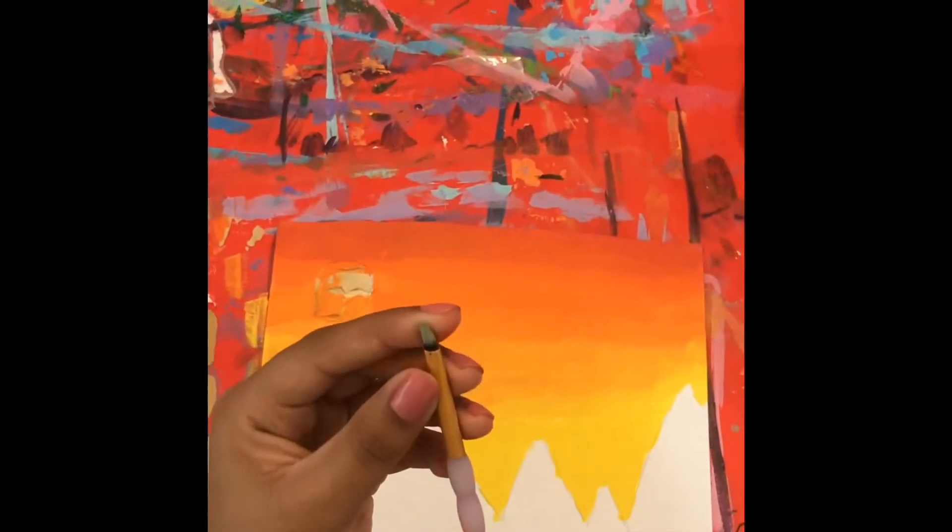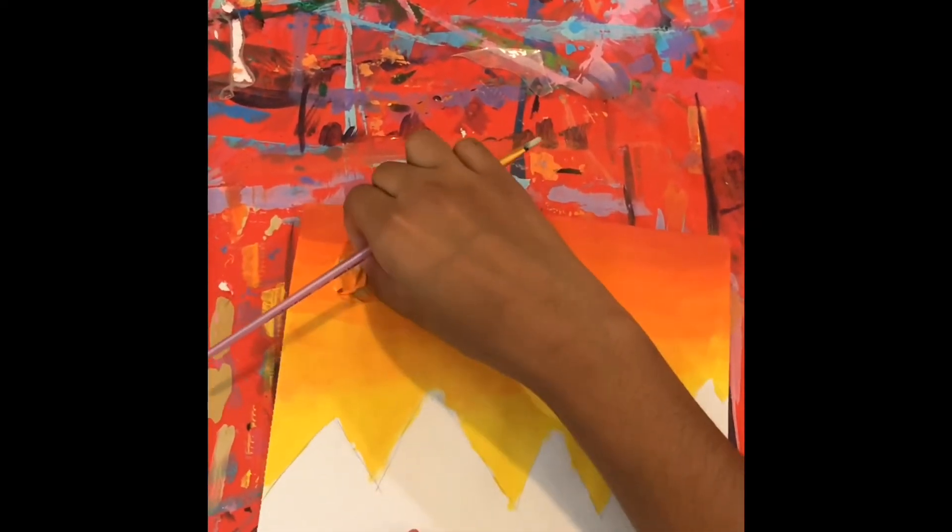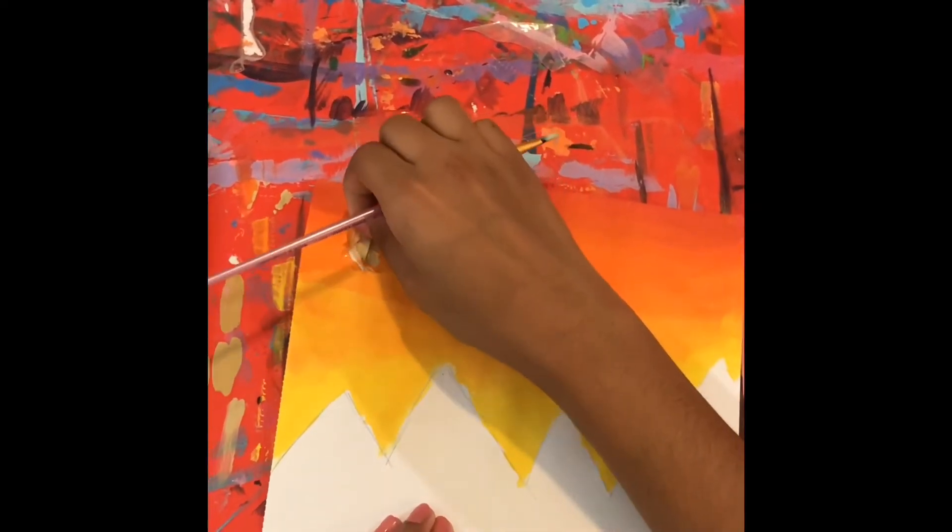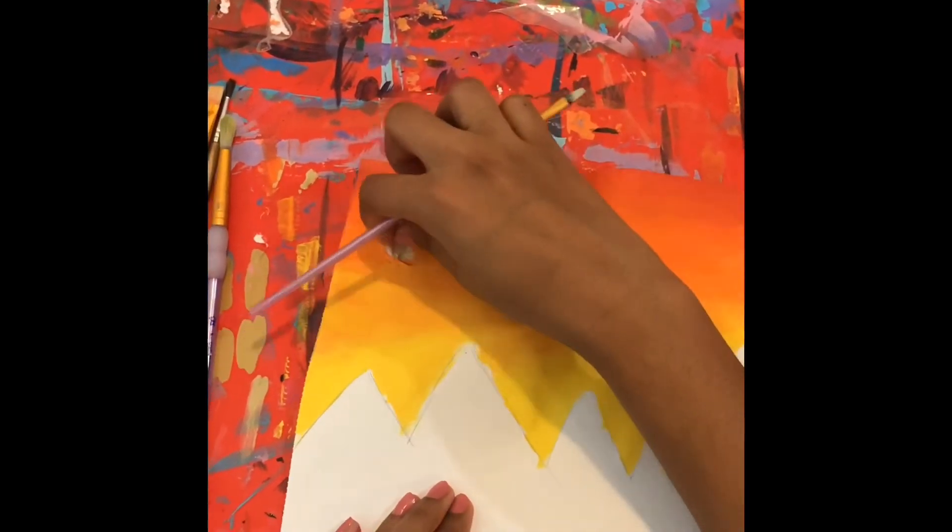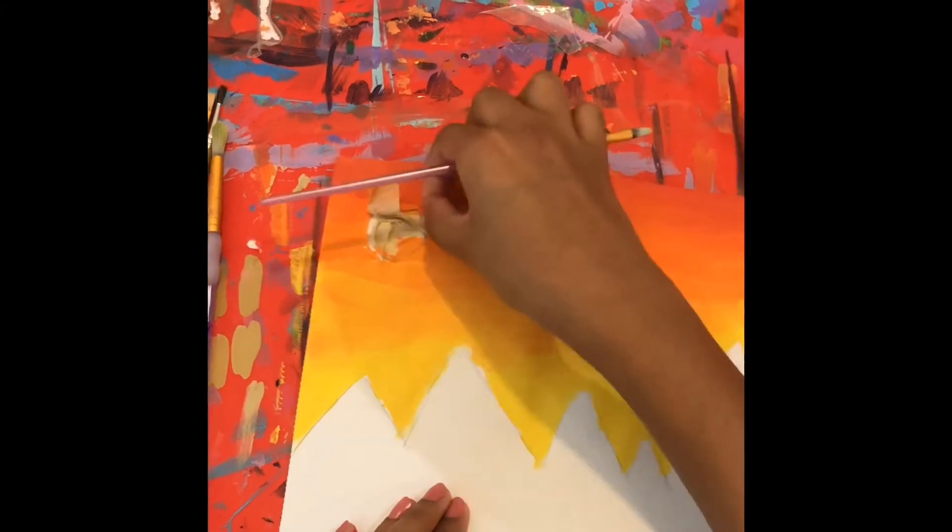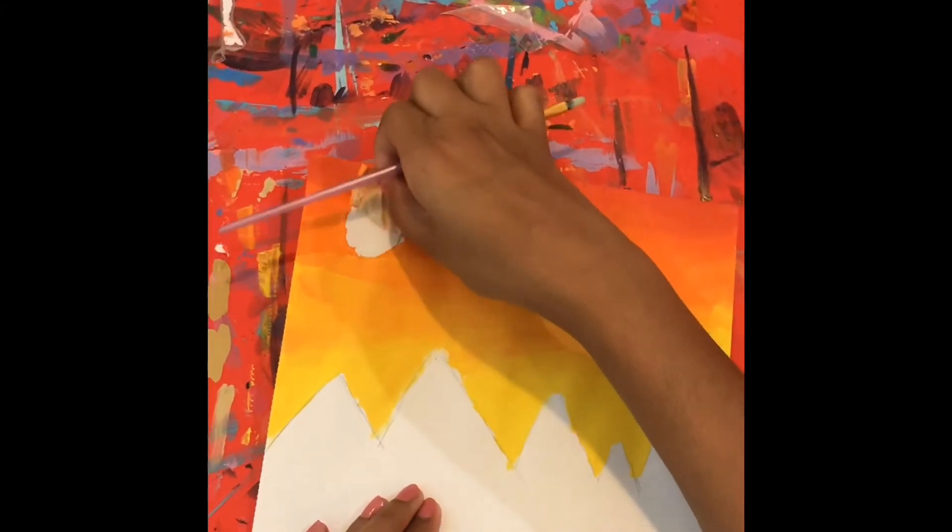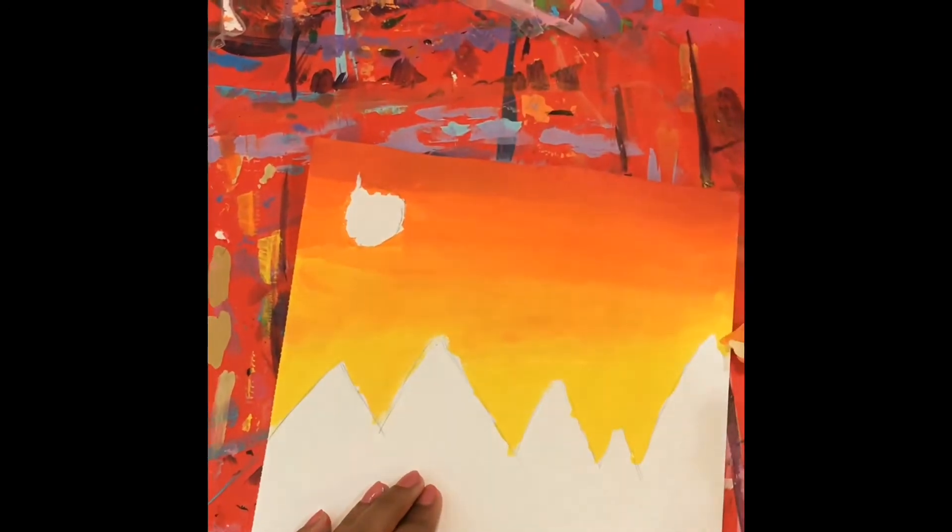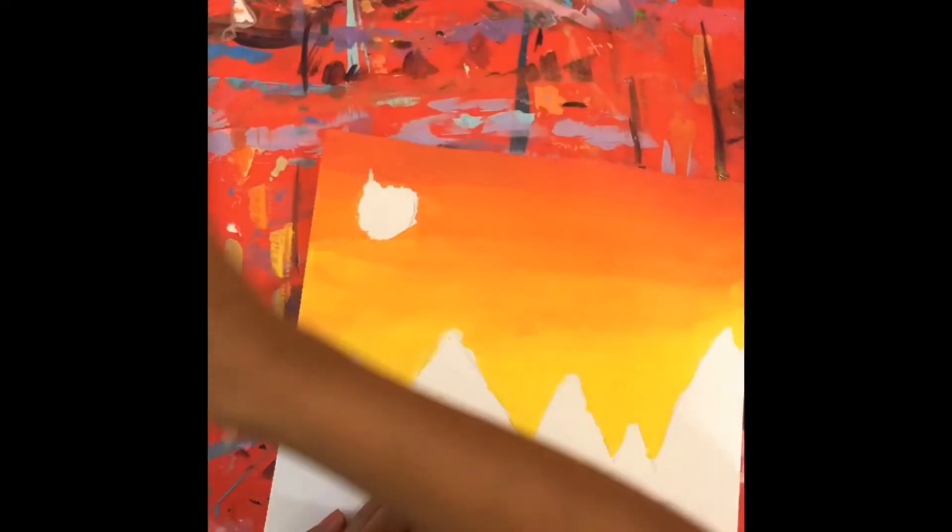Then you want to go in with a small rounded brush to do the sun. First, you want to take the tape off your sun. And see, no paint got on it. So you take your tape out. As you can see, it got a little messed up there.